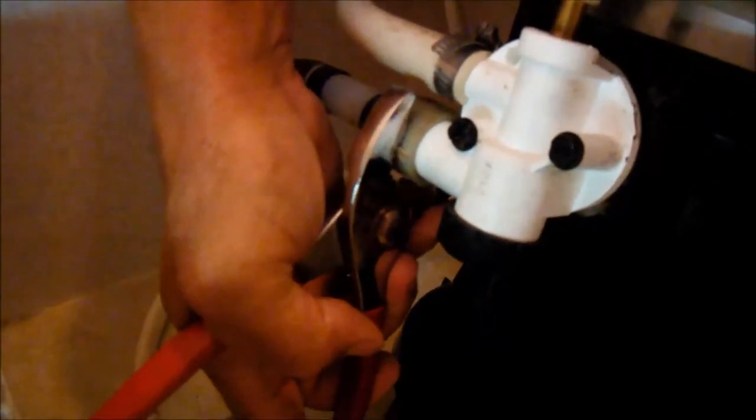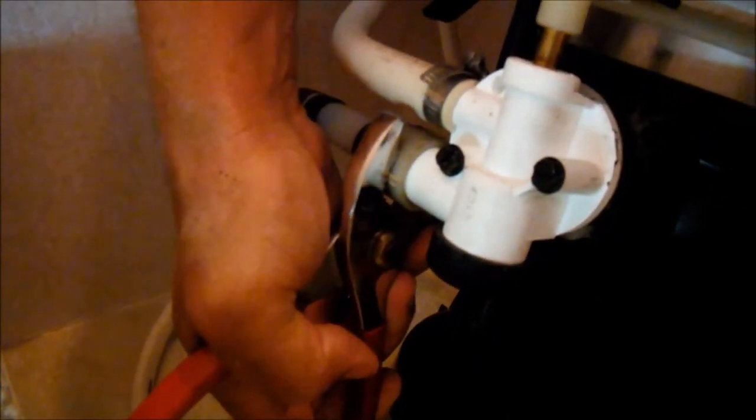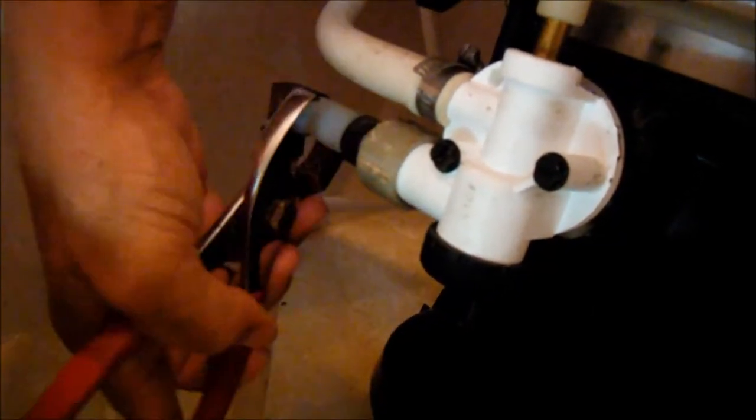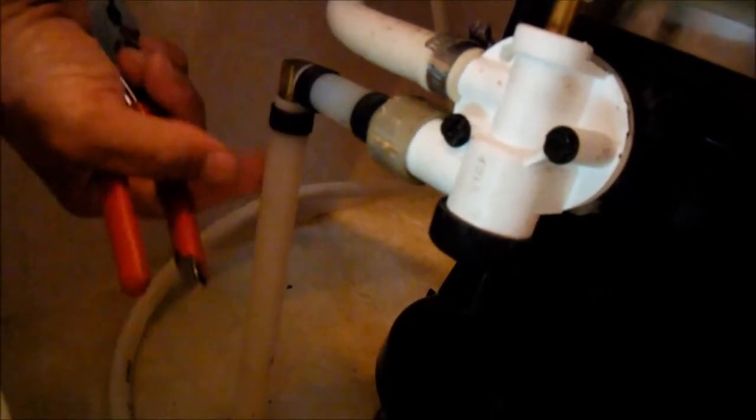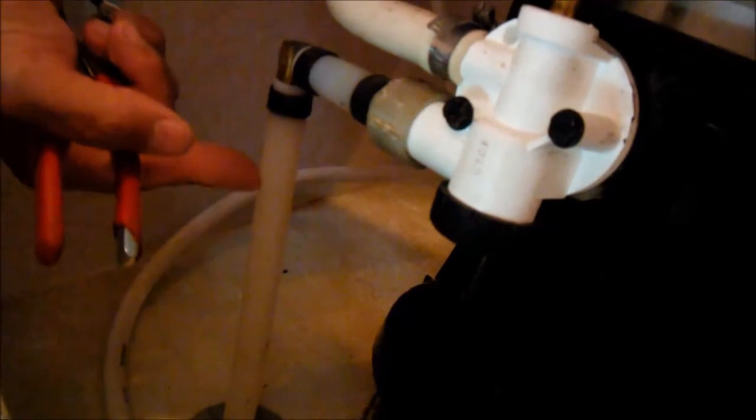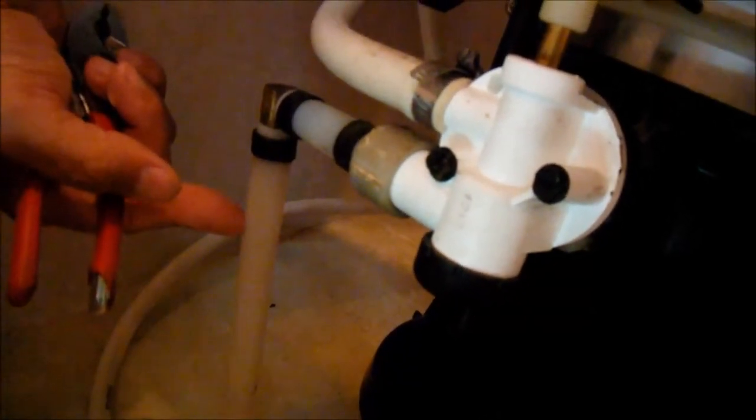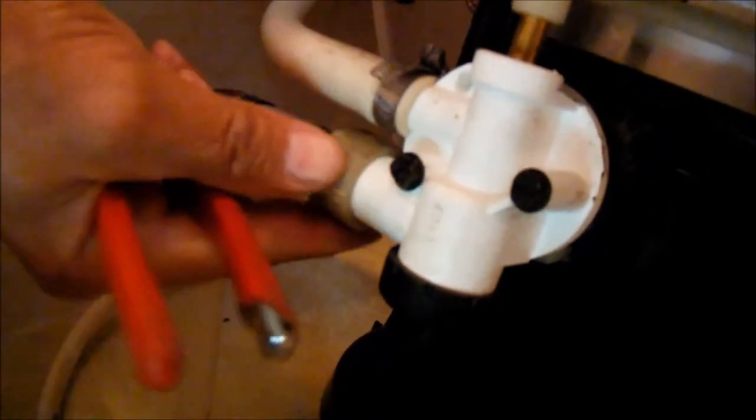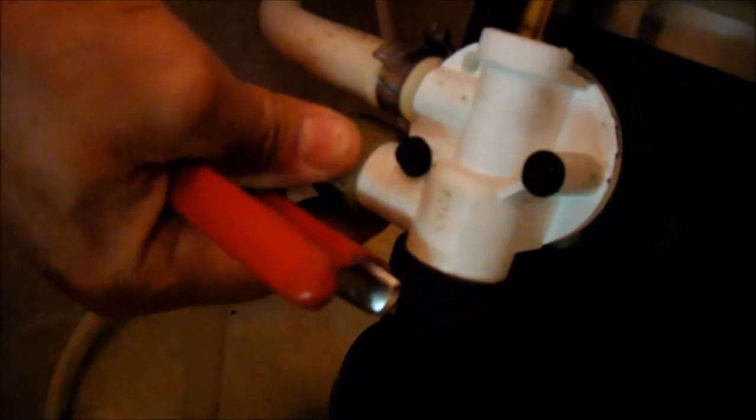Had a little bit of trouble reaching this fitting right here while the toilet was mounted on the floor. So once we got all the bolts off, I just pulled it out. The water supply line has enough give in it to lift it up some and tilt the toilet so we can actually reach this with a set of pliers to loosen it up.